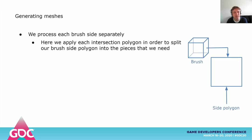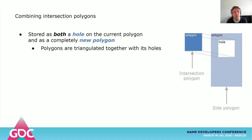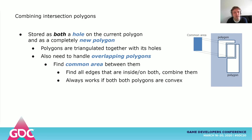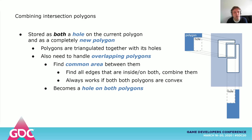In order to generate our per-brush meshes, we process each brush side separately, processing the side polygon together with the intersecting polygons that lie on it. We use a triangulation algorithm that supports polygons with holes, so it only creates triangles for the areas of a polygon that is not part of a hole. When we use each intersection polygon, we add it as both a hole in the side polygon, and also as a new polygon itself. When a new intersection polygon intersects a previously added polygon, we need to do a little bit more work. If they intersect, we find the common area — which will always be convex if both intersecting polygons are convex. We then add that common area polygon as a hole to both the overlapping polygons, and also add this common area polygon as yet another polygon by itself.